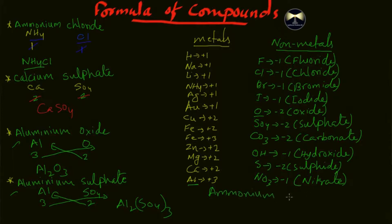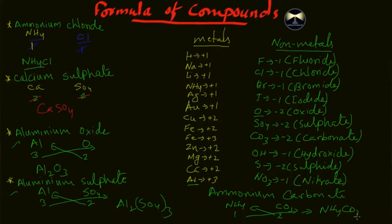Let's take another example: ammonium carbonate. The formula for ammonium is NH4 and the formula for carbonate is CO3. The oxidation state of ammonium is one and the oxidation state of carbonate is two. After cross multiplication the formula is (NH4)2CO3. Notice we do not put a bracket around CO3 here because there is only a one after it — you only add a bracket when the number is greater than one and the ion is a compound.